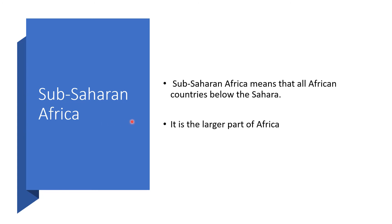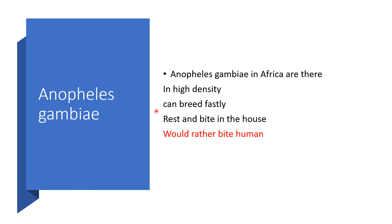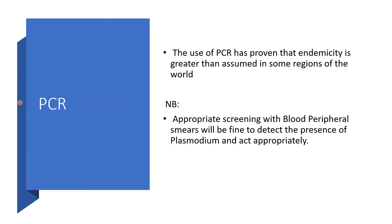Sub-Saharan Africa: I want to define this very clearly because we'll be making reference to it a lot. Sub-Saharan Africa means all African countries below the Sahara — it is the larger part of Africa. Anopheles gambiae in Africa are present in high density; they can breed very rapidly, they rest and bite in the house, and would rather bite humans — they are anthropophilic. The use of polymerase chain reaction has proven that endemicity is greater in those zones in some regions of the world.